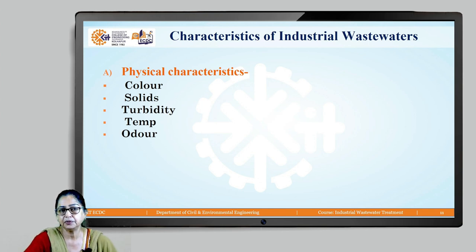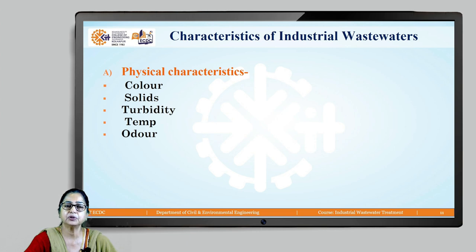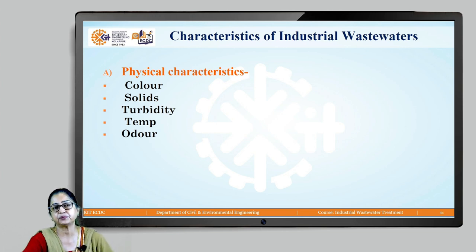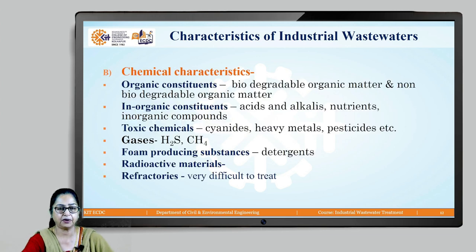Let's look at the characteristics of industrial wastewater. Physical characteristics include colour, which varies from industry to industry; solids, which are also variable but many industrial wastewaters have very high suspended and dissolved solids; and temperature, which is normally high. Some industries, especially chemical industries, produce wastewater with quite strong odour.